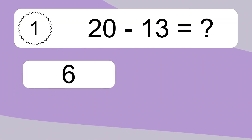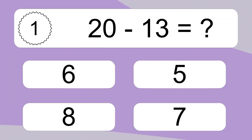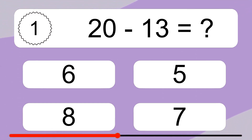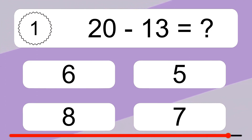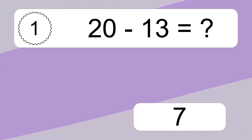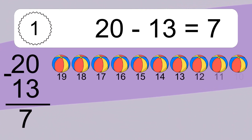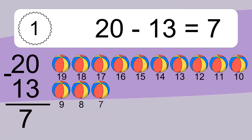20 minus 13 equals what? 20 minus 13 equals 7.